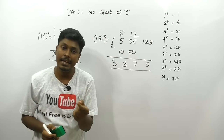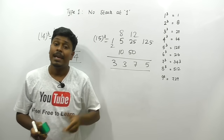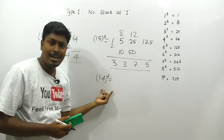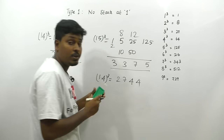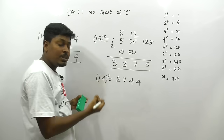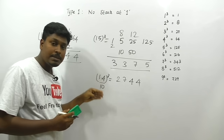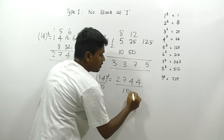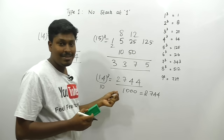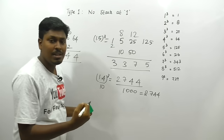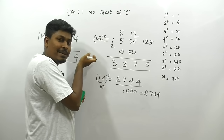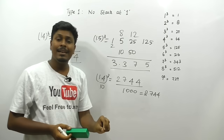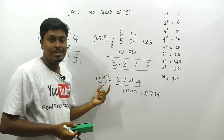Practice this for 16³, 17³, 18³, and 19³ — that's Type 1. Also, many people ask about 1.4³. Since 14³ = 2744, and 1.4 = 14/10, we divide by 10³ = 1000, giving 2.744. Similarly, 1.5³: since 15³ = 3375, divided by 1000 gives 3.375. Even in approximation questions, these exact values will match the answer options.